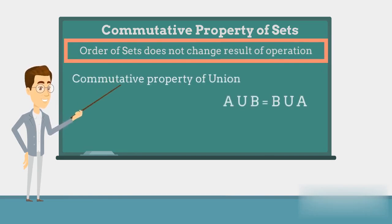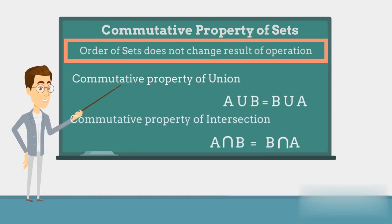In other words, we can say that whether we write A union B or B union A, it is the same. Similarly, if we write A intersection B or B intersection A, it is also the same.